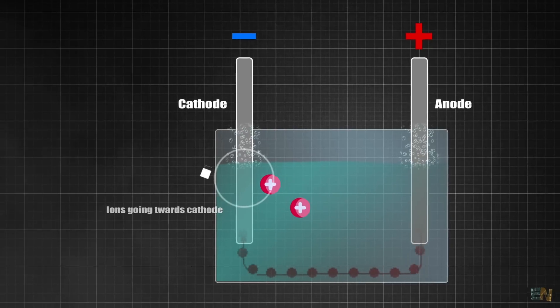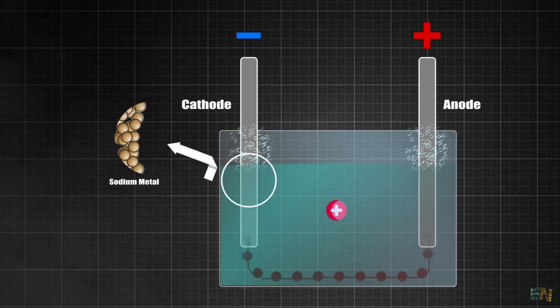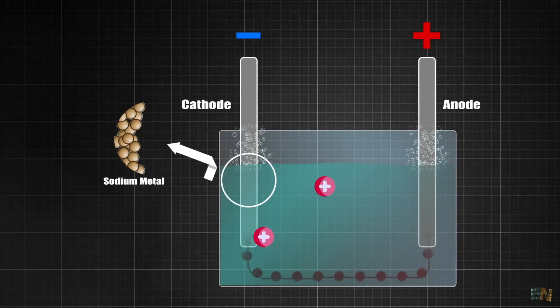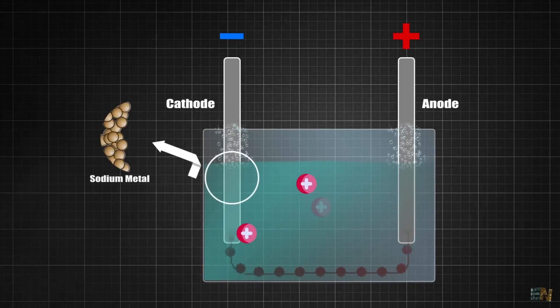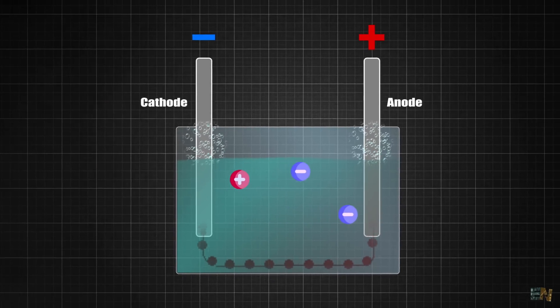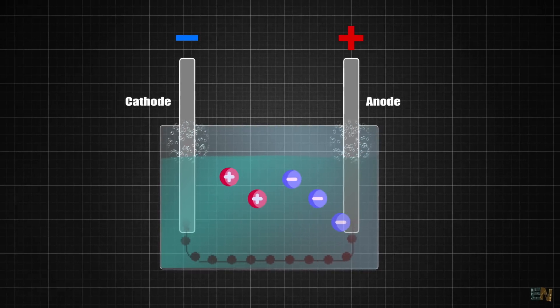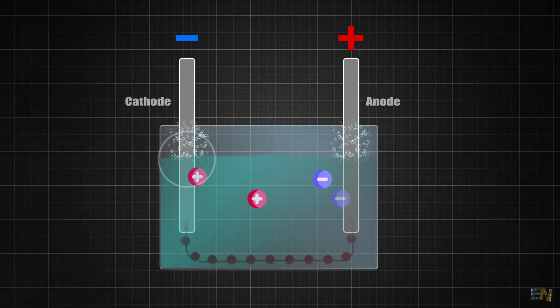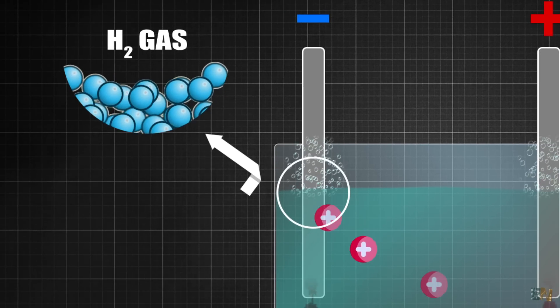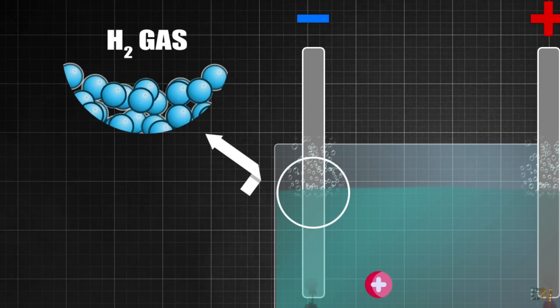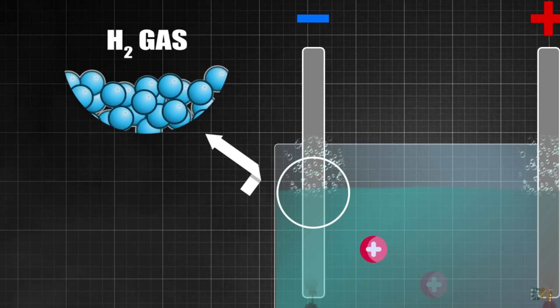At the cathode, the sodium ions will gain electrons and are reduced to form sodium metal. The sodium ions will go towards the cathode and the hydroxide ions will go towards the anode. The hydrogen ions from the water also gain some electrons and they are reduced to form hydrogen gas, or H2.